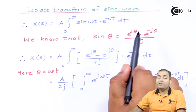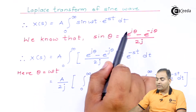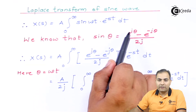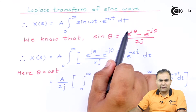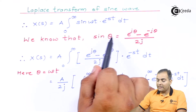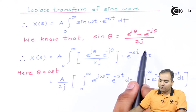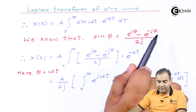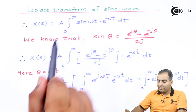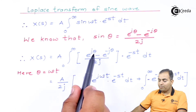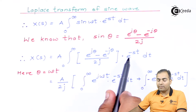The complex exponential formula is: sin(θ) = (e^(jθ) − e^(−jθ)) / 2j, where i is replaced by j for complex terms. Substituting θ = ωt, I replace all θ with ωt, and multiply by e^(−st). This gives us: (e^(jωt) − e^(−jωt)) / 2j, all multiplied by e^(−st).